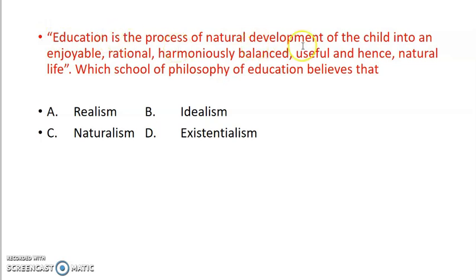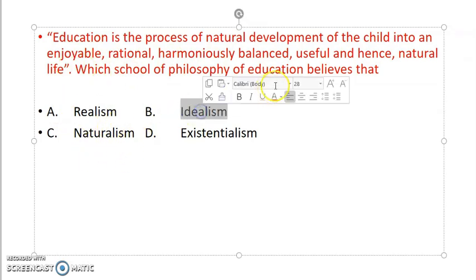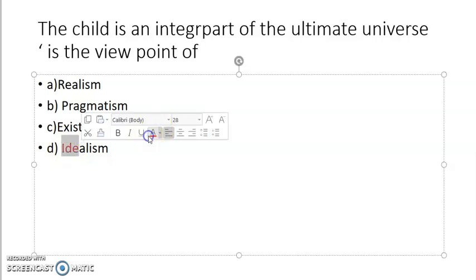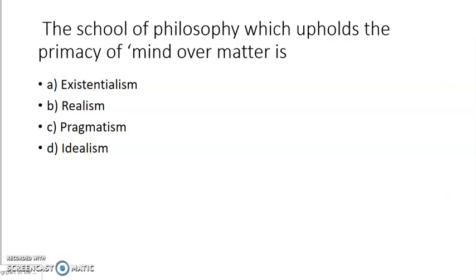Next question is: Education is the process of natural development of the child into an enjoyable, rational, harmoniously balanced, useful and hence natural life. Which school of philosophy will you choose? So answer is B, idealism. The child is an integral part of the ultimate universe - this is the viewpoint of realism, pragmatism, existentialism, or idealism? Idealism believes the child is an integral part. Also, naturalism believes this as well.